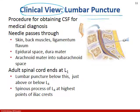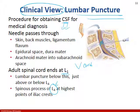For a lumbar puncture, we attempt the procedure below L1 — below where the spinal cord ends at the conus medularis. Below L1, at around L4, we only have the cauda equina — the individual spinal nerves — so there's less chance of permanently damaging the spinal cord. We collect cerebrospinal fluid to test it: for example, to detect certain cancers within the brain or spinal cord, or bacterial infections, using it to make a diagnosis.